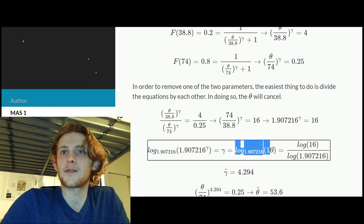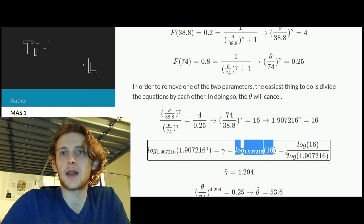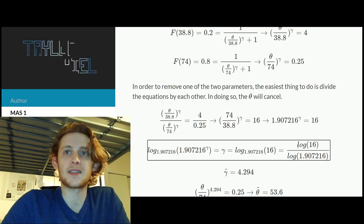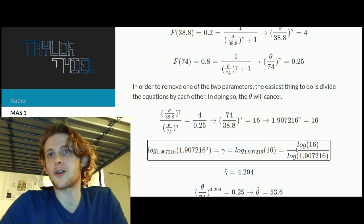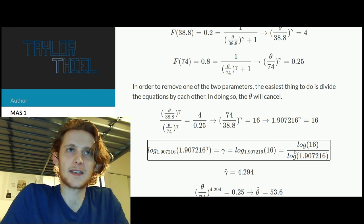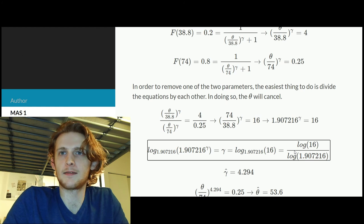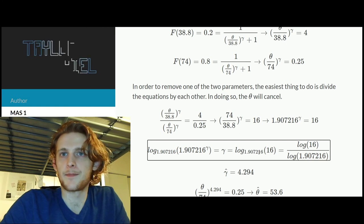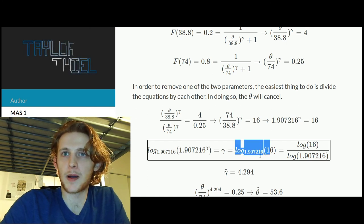So that's how we're getting this calculation over here. So we're choosing this base so that way it cancels with this 1.907216 to a constant of one, and then all you're left with is gamma on the left side. But then on the right side when we have this log base 1.9 of 16, we can say that's the same as log base 10 of 16 divided by log base 10 of 1.9, or log base e. The base on the right does not matter, and so that's how you go about calculating this.